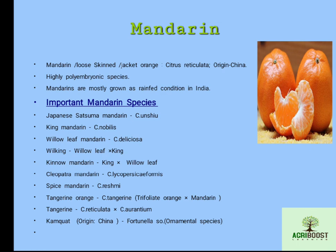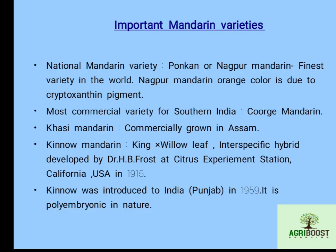The last species of mandarin is kumquat, which originated from China. Its scientific name is Fortunella species — it is an important ornamental species of mandarin. Nagpur mandarin is the national mandarin variety and is called one of the finest varieties in the world. The orange color in Nagpur mandarin is due to the presence of cryptoxanthin pigment. The most commercial variety for south India is Coorg mandarin.